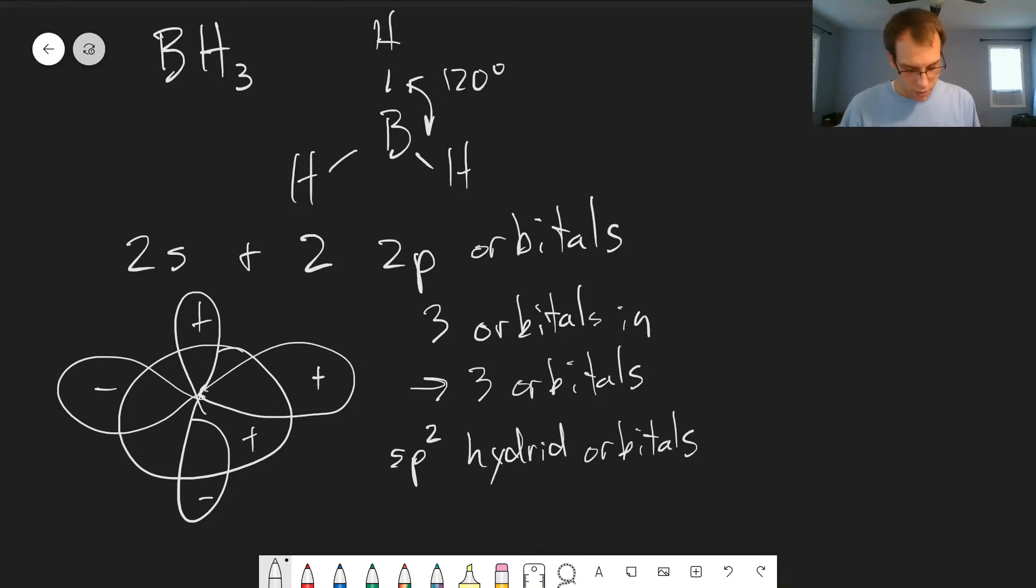And the mathematical functions that describe these, we have psi 1, psi 2, psi 3. And if we combine these with proper symmetry, we get 1 over square root of 3 times the 2s orbital plus square root of 2 thirds of the 2pz orbital.